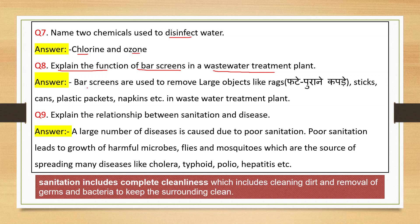Next question: Explain the function of bar screens in a wastewater treatment plant. Bar screens are used to remove large objects like rags, sticks, cans, plastic packets, napkins, etc. in a wastewater treatment plant.